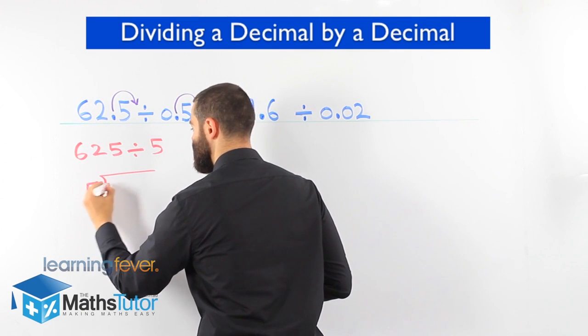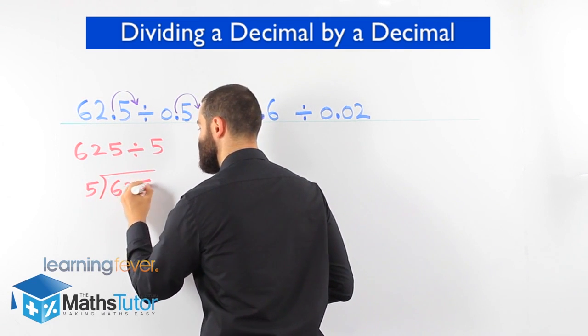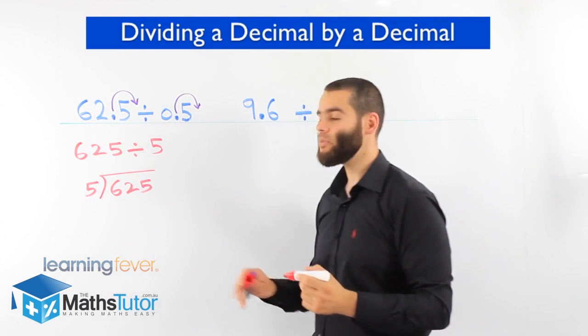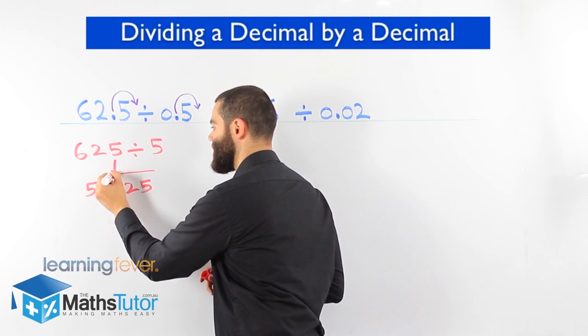We have 5 and 625 here. So 625 divided by 5. How many now? Simple. How many fives go into 6? 1.